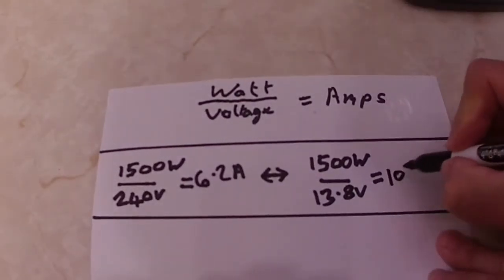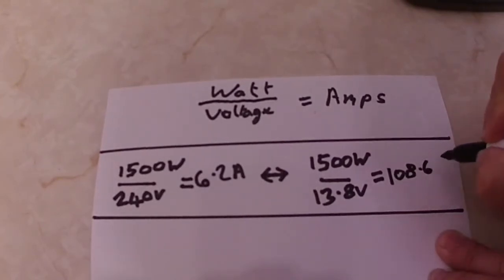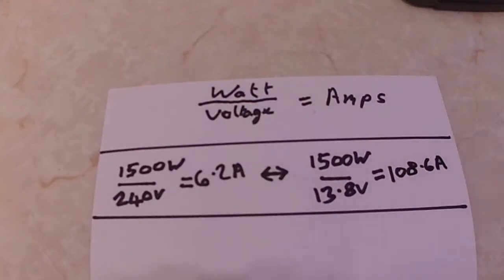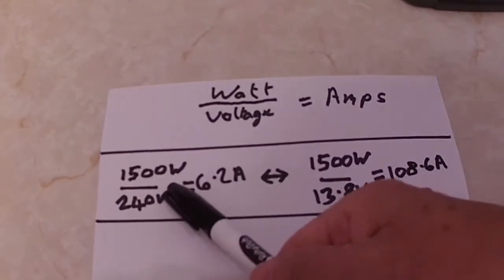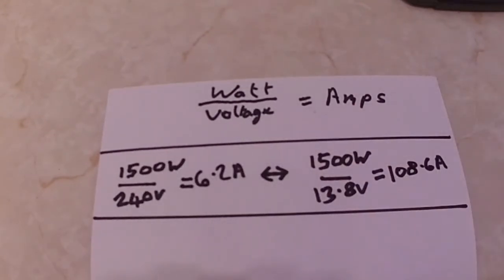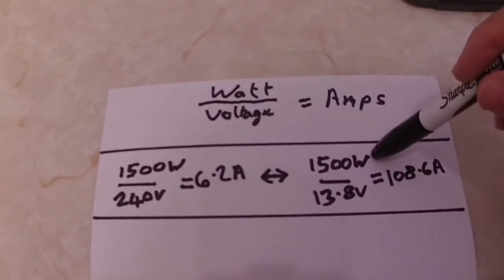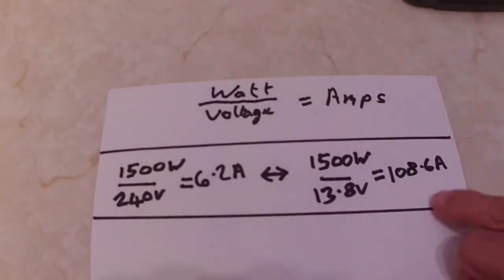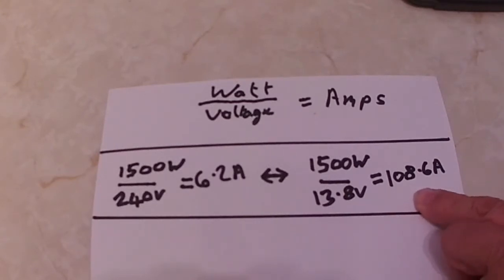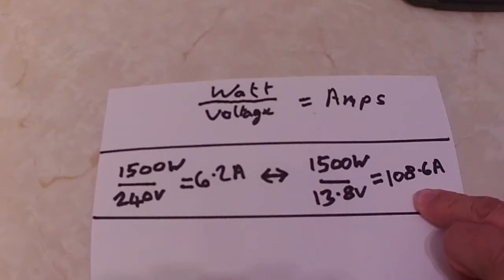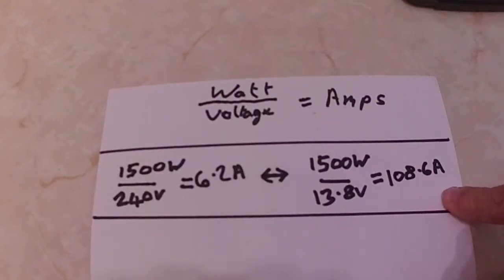108.6 amps. So just running a 1.5 kilowatt toaster on the mains at home would take 6.2 amps so it's not a problem. Running that toaster in your motorhome by inverter, 108 amps, that's a lot of current. So the cable that's to your inverter and to your batteries has to be quite thick as you can imagine.